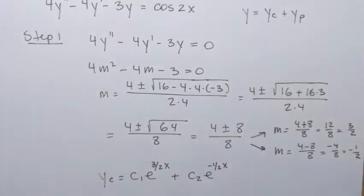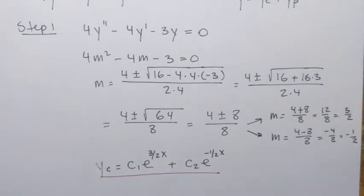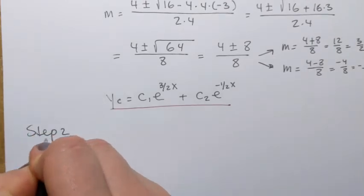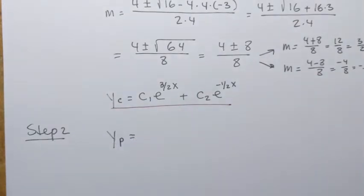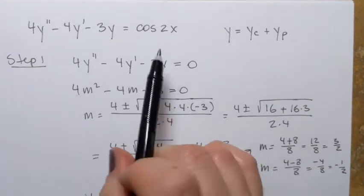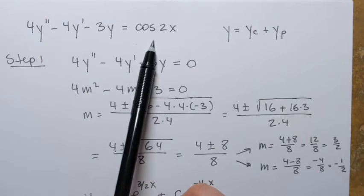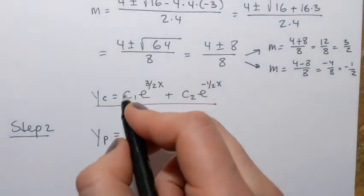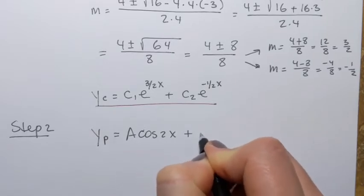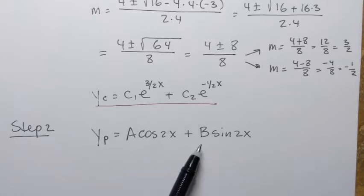So we got that part. Next, let's find the particular solution — step 2. The particular solution yp has the same form as the function on the right-hand side of the non-homogeneous equation. Since it's a trigonometric function, cosine of 2x, the particular solution will have the form: A·cosine(2x) plus B·sine(2x). Our goal is to find constants A and B.